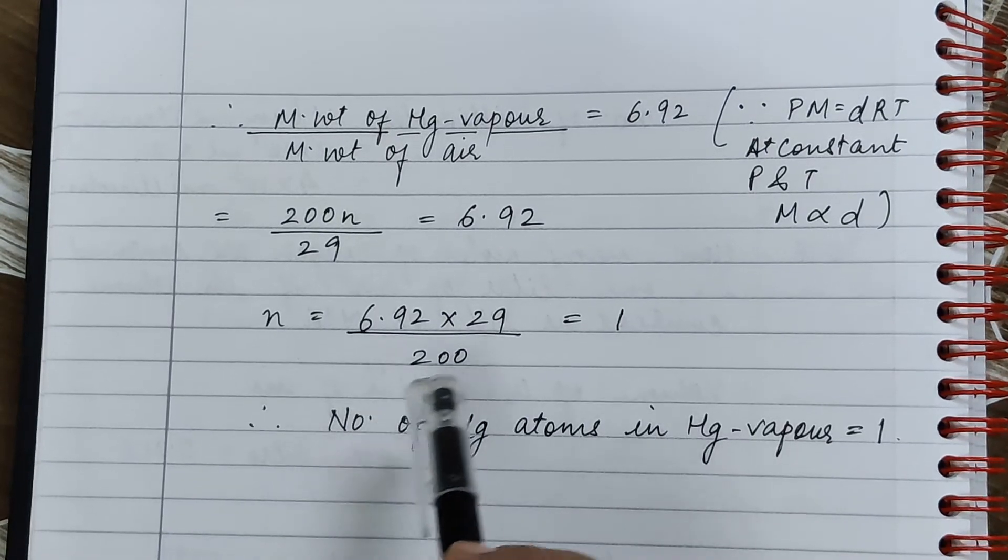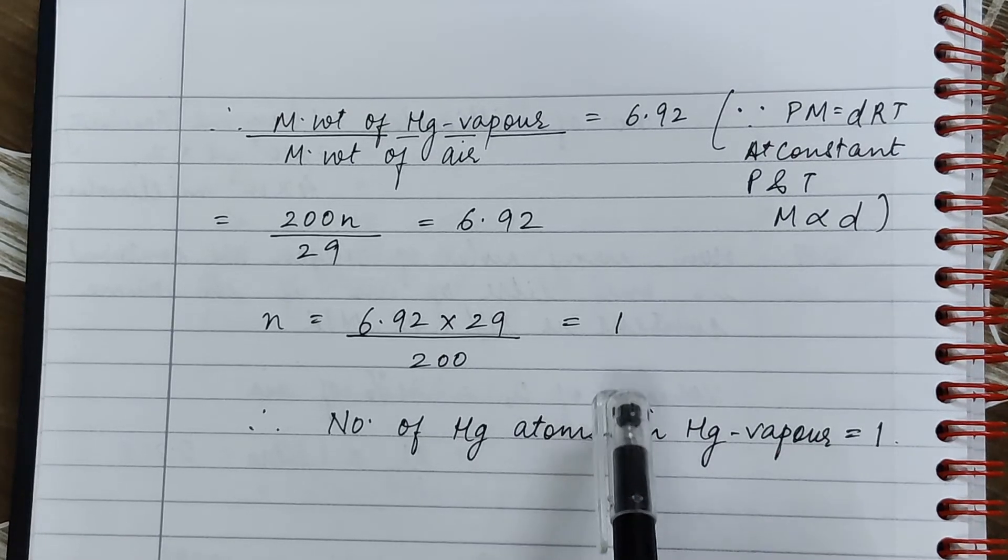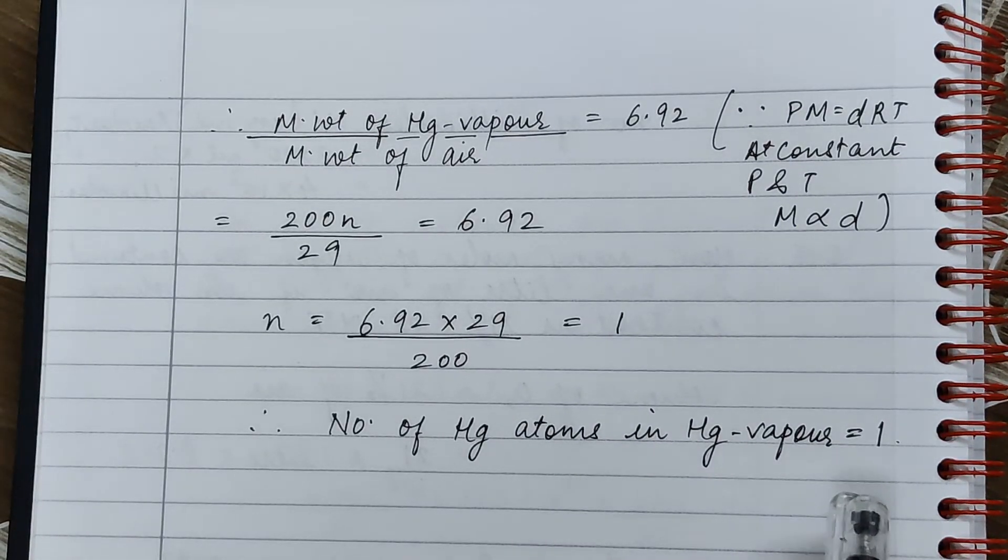So N is equal to 6.92 into 29 divided by 200, which is equal to 1. Therefore, the number of mercury atoms in mercury vapor is equal to 1.